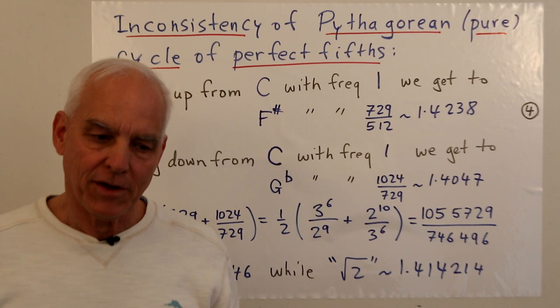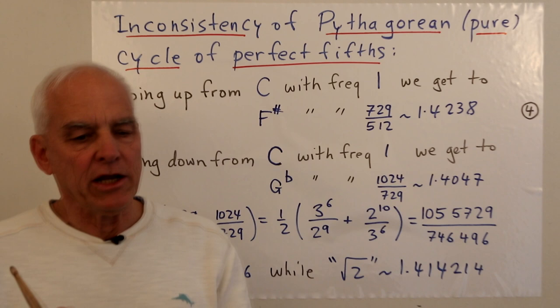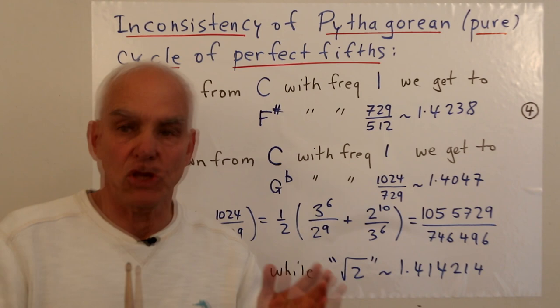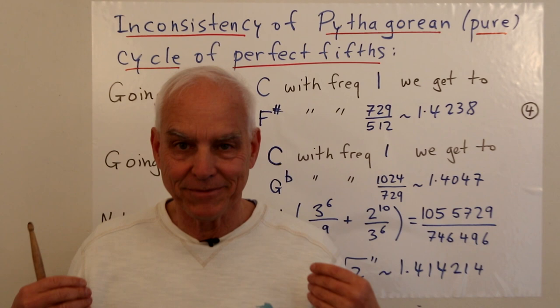The irrationality of the square root of two is not just something that comes up in geometry — it also comes up very prominently in music, and the Pythagoreans had their hand in both of these camps. I'm Norman Wahlberger. Thanks for listening.